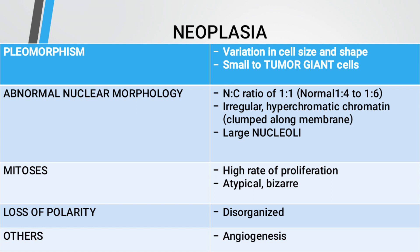Another type is pleomorphism — variation in cell size and shape. Cells are small at the beginning and eventually grow larger. Abnormal nuclear morphology: the nuclear-to-cytoplasmic ratio is 1:1, but the normal ratio is 1:4 to 1:6. They are irregular and hyperchromatic, clumped along the membrane, with large nuclei. Mitosis shows a high rate of proliferation, atypical figures, and lost polarity — which is disorganized. This neoplasia also causes angiogenesis.